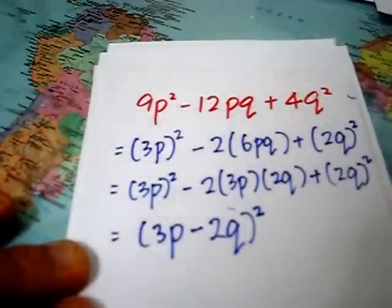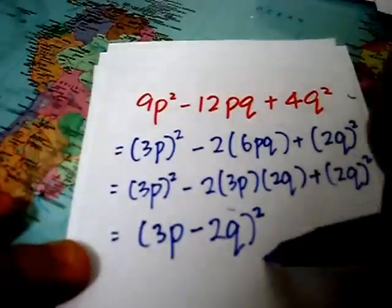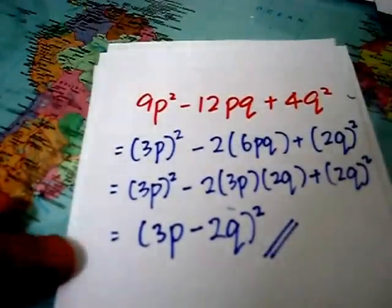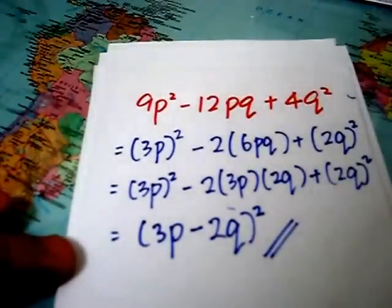9p square minus 12p cube plus 4q square. Hence, this is the completely factorized form.